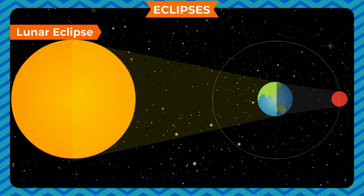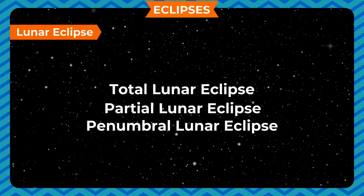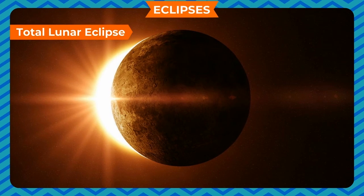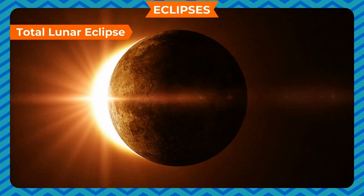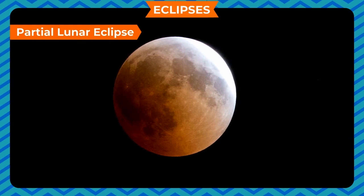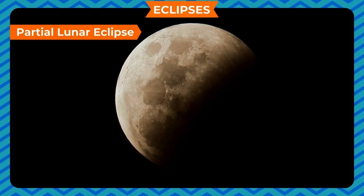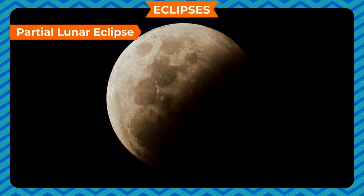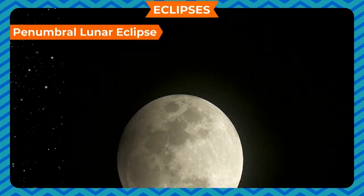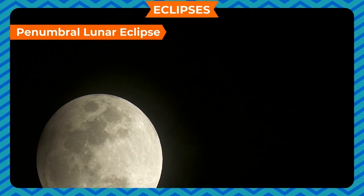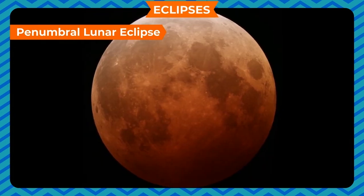There are three types of lunar eclipse: Total, Partial and Penumbral. Total lunar eclipse occurs when the earth's umbra — the central dark portion of its shadow — obscures the moon. Partial lunar eclipse occurs when the moon is not completely obscured by the earth's umbra and remains partially visible from the earth. Penumbral lunar eclipse occurs when the moon travels through the penumbral part of the earth's shadow.